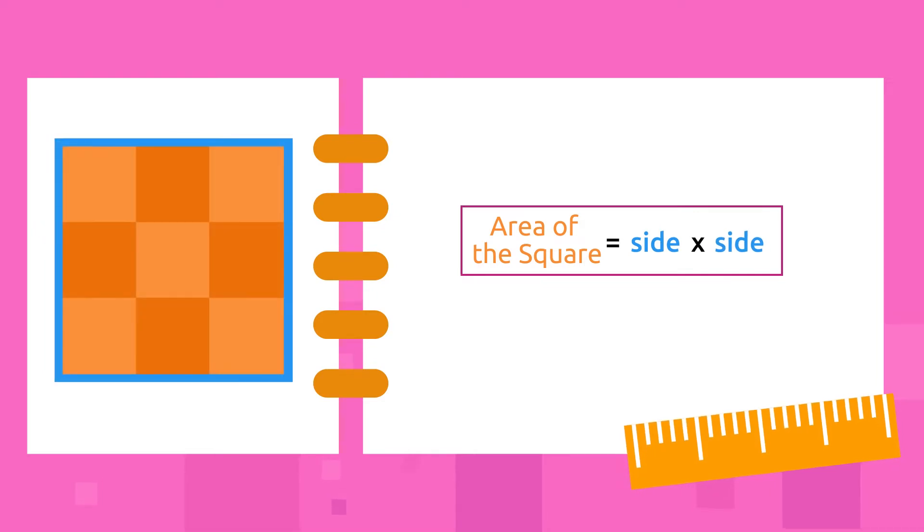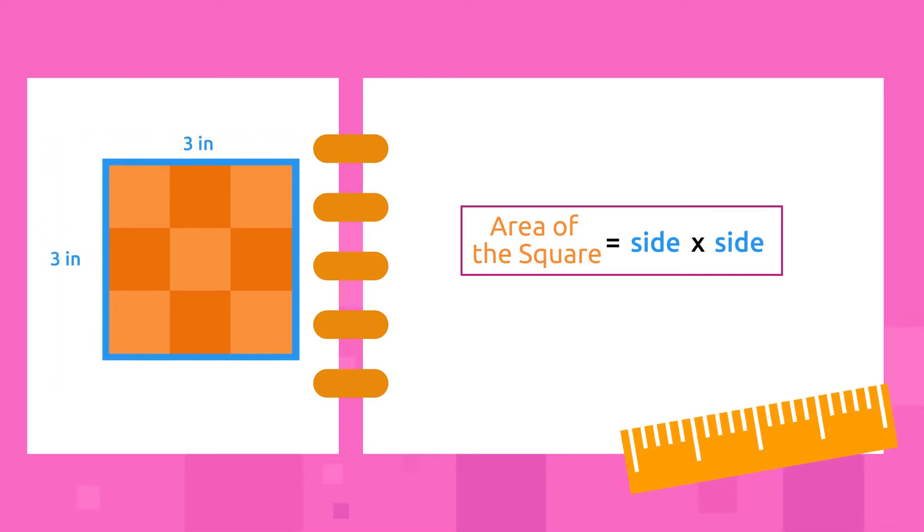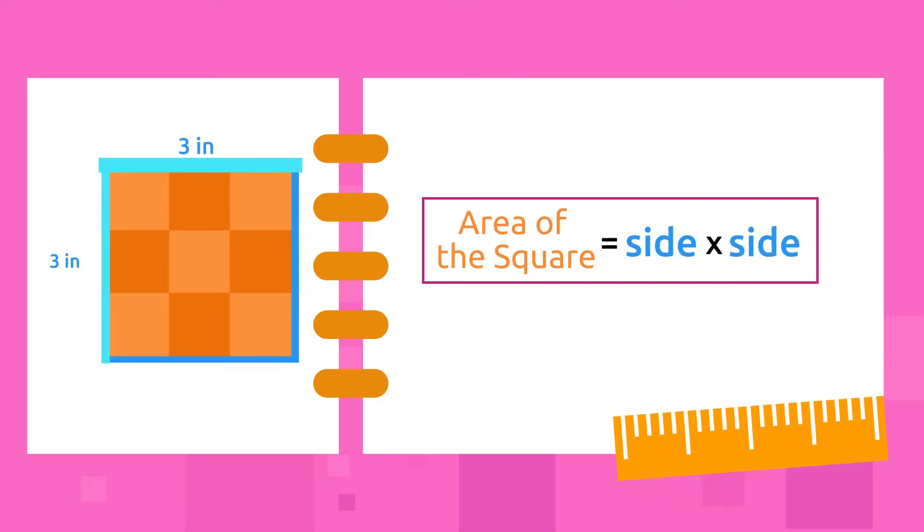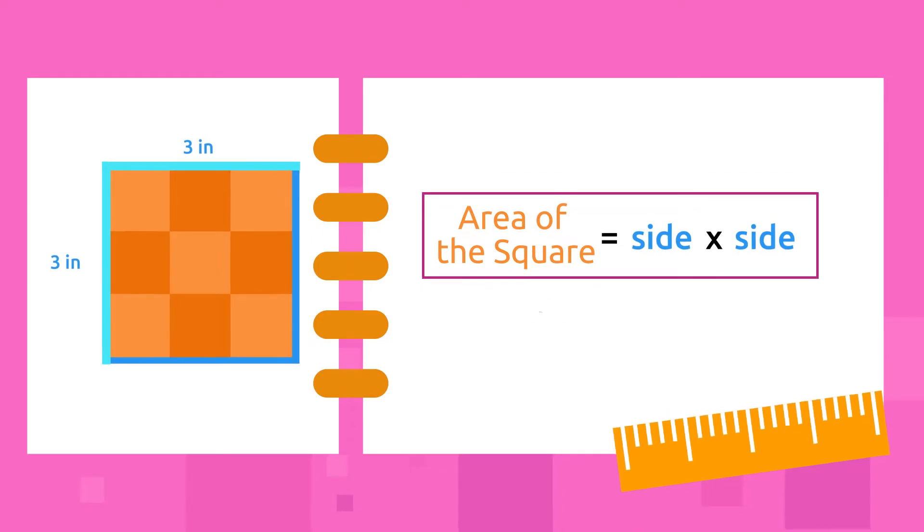The sides of this square measure three inches each. To find its area, we should multiply one side by the other, meaning we should multiply one side by itself. That is, three by three, which equals nine.